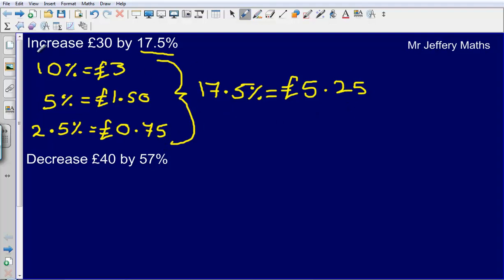Now I'm not quite finished here because it's asking me to increase my amount by 17.5%. I've just worked out 17.5% is £5.25. So increase £30.00 by £5.25. My final answer here is going to be £35.25. So just adding on that percentage to my original amount and that there is my final answer.